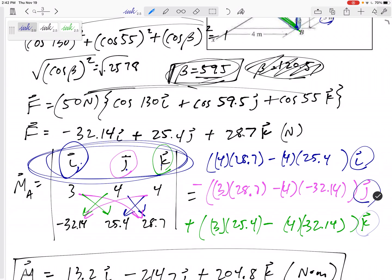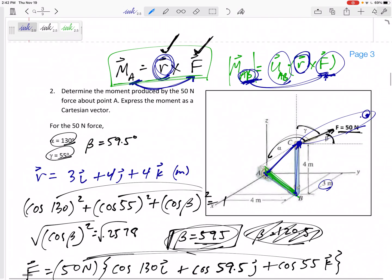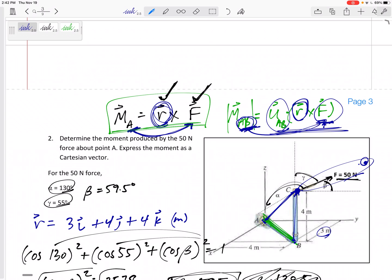See, the big difference, this right here, the math gives you the magnitude. There are no more I's, J's, K's.